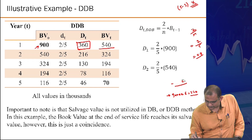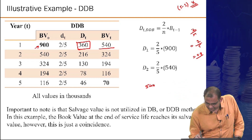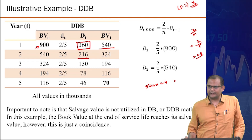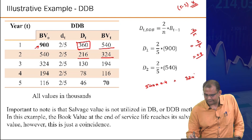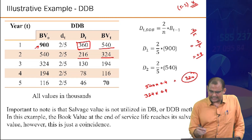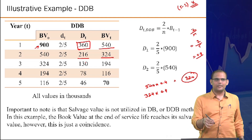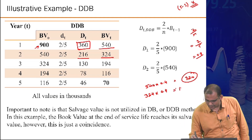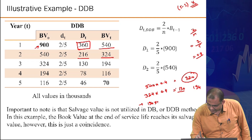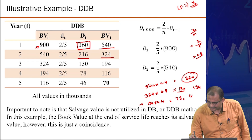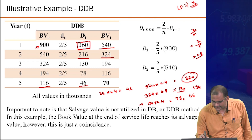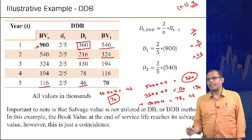Continuing DDB: year 3: 324 × 0.4 = 130 (rounded), book value = 194. Year 4: 194 × 0.4 = 78, book value = 116. Year 5: 116 × 0.4 ≈ 46, remaining = 70.